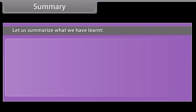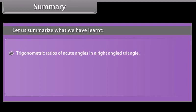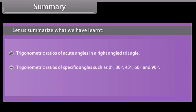Summary. Let us summarize what we have learned: trigonometric ratios of specific angles such as 0°, 30°, 45°, 60°, and 90°, and trigonometric ratios of complementary angles.